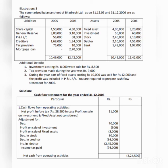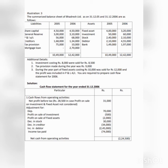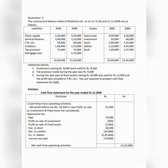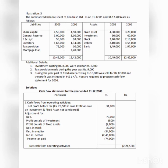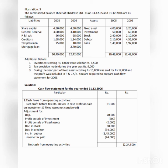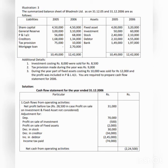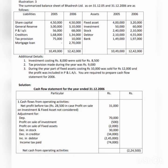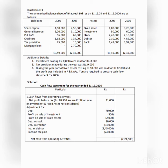The next step is to make the adjustment for working capital — current assets minus current liabilities. The rule is: decrease in current assets and increase in current liabilities are added; increase in current assets and decrease in current liabilities are deducted. For example, stock has a previous balance of 2,40,000 and current year balance of 2,10,000, meaning a decrease of 30,000, so we add that amount. The same rule applies to other current assets and liabilities. Finally, deduct tax paid during the year to arrive at cash flow from or cash used in operating activities.